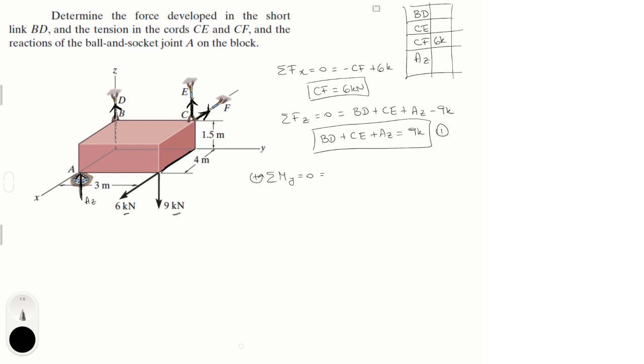So forces are CF times 1.5. Sorry guys, stupid software update. Where was I? Okay, so CF times 1.5 is basically the distance between C and the Y axis and it's trying to turn it clockwise so it's negative. Then we have the AZ times 4, which is 4 being the distance from where A is applied to the Y or the origin.